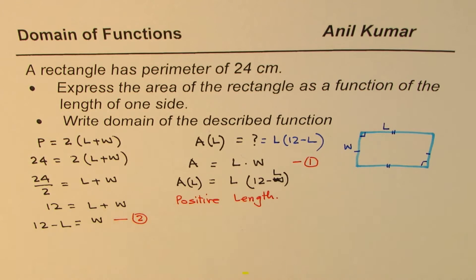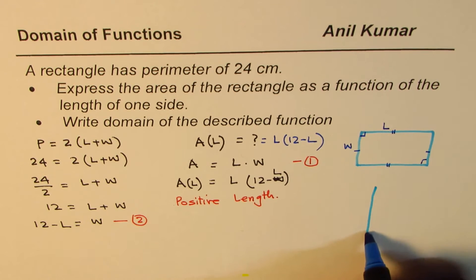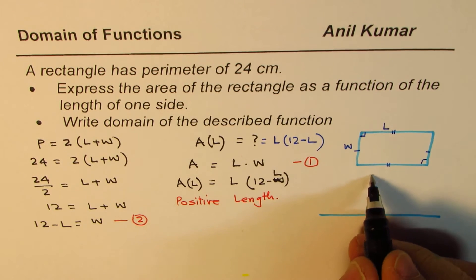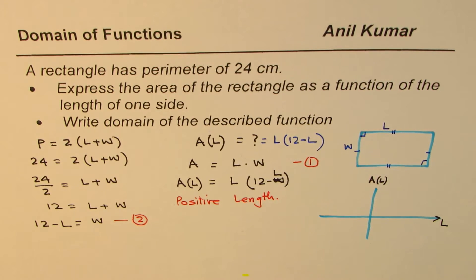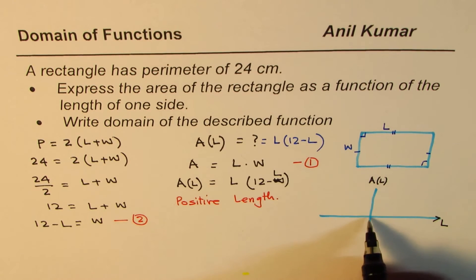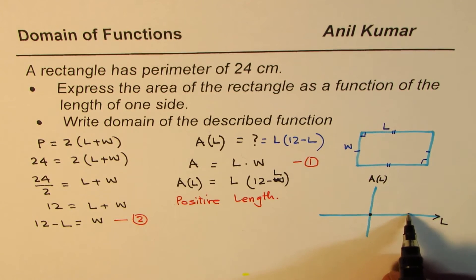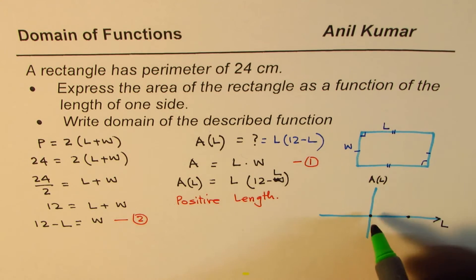So what values of L will be positive? You could solve in a couple of ways. One, you could graph, or you could do inequalities. So let me just graph it here. We are trying to graph this function area, which is function of length. That means L is the independent variable. It has two zeros. One is at zero, the other one is at 12. So the graph will be a parabola going downwards.